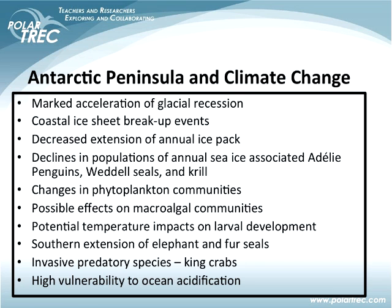Phytoplankton are also having some trouble. There are possible effects on algal communities, and rising temperature may influence marine invertebrate larvae that are very sensitive to temperature changes. Elephant and fur seals are appearing — you have to be careful sometimes, as you can walk out the door and trip over a very large elephant seal. There are invasive predatory king crabs. And of course the reason we're all here today are the studies of ocean acidification in this region.